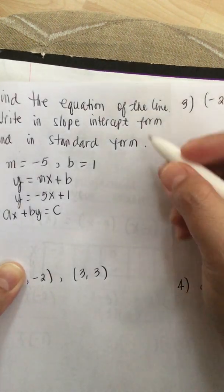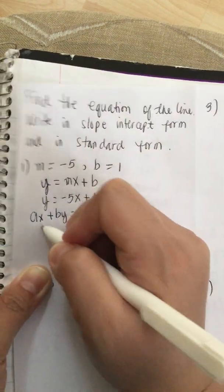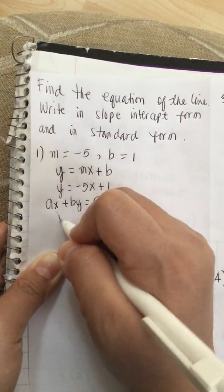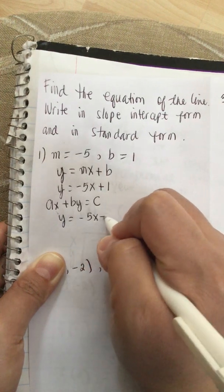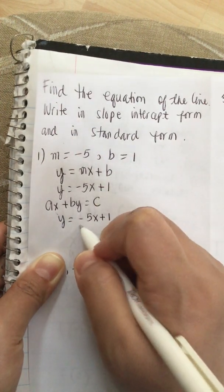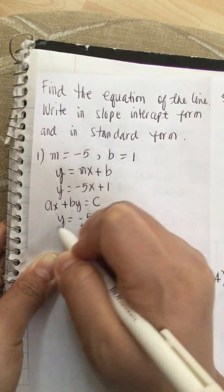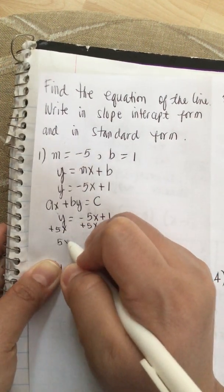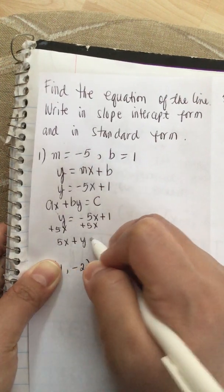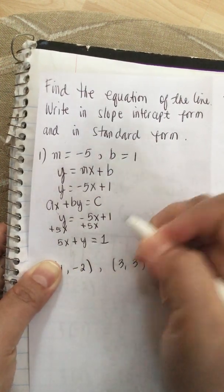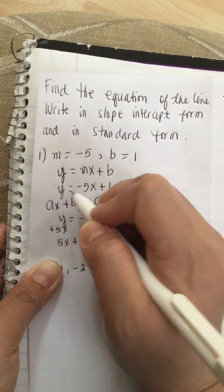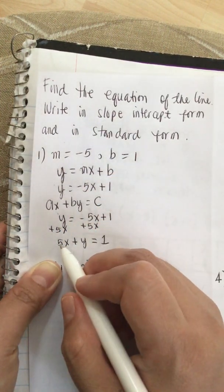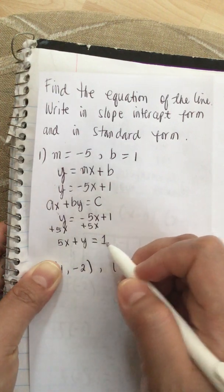So we have the equation y equals minus 5x plus 1. We add 5x to both sides, so now we have 5x plus y is equal to 1. So these are the two answers: y equals minus 5x plus 1, and 5x plus y equals 1.